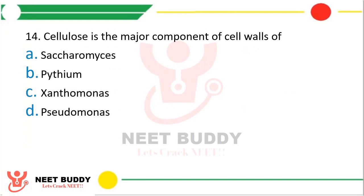Question fourteen. Cellulose is a major component of the cell wall of: Saccharomyces, Pythium, Xanthomonas, or Pseudomonas. The correct answer is option B — Pythium.